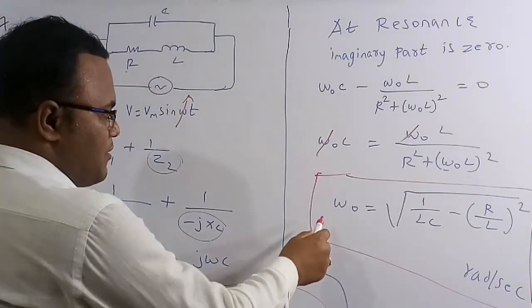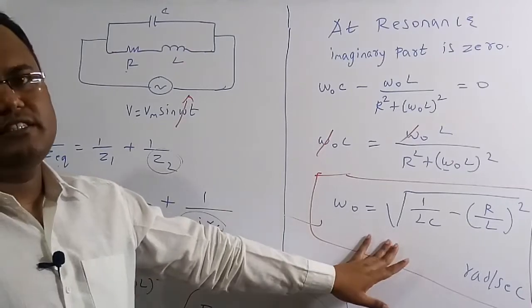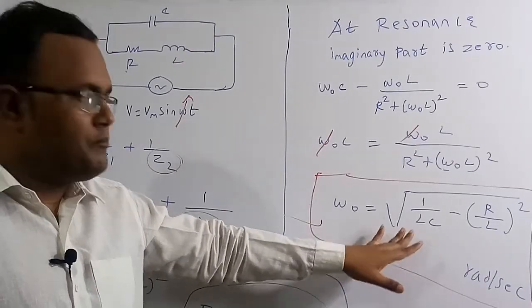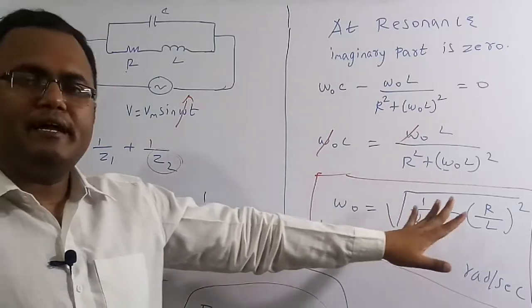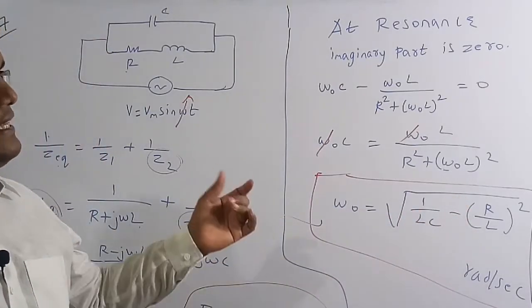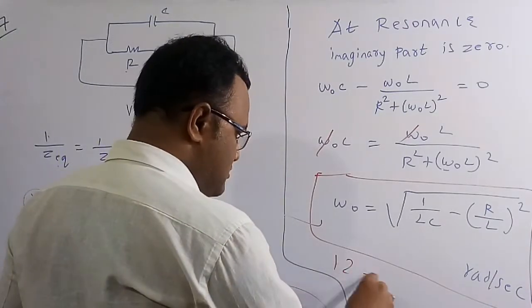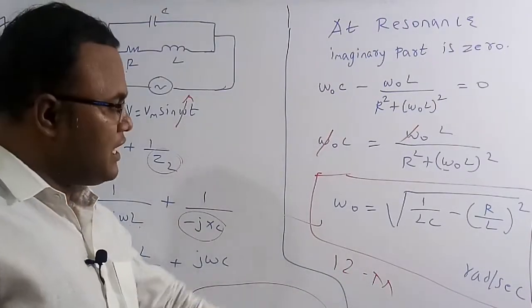This is a very important formula: ω₀ = √(1/LC − (R/L)²) rad/s. Questions based on this formula appear in IES prelims as well. Following the detailed procedure will earn you the full 12 marks. This question is from IES Mains 2016.